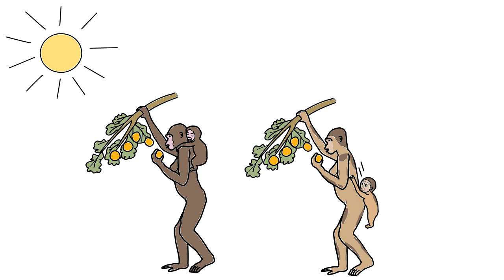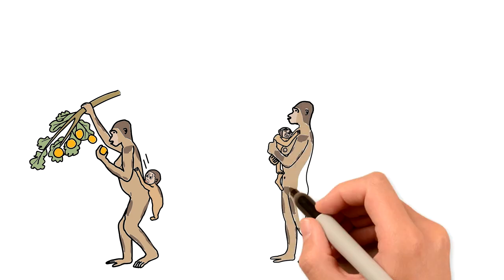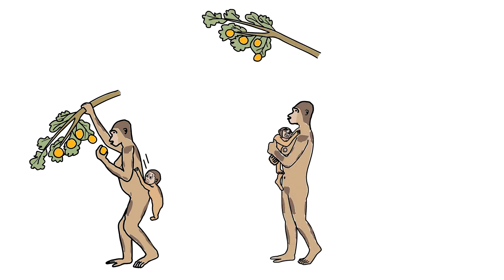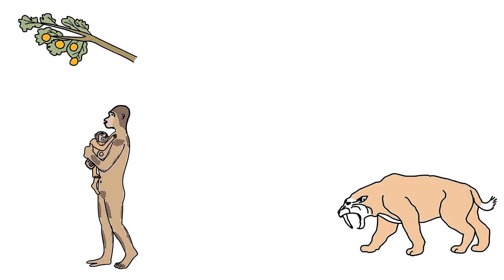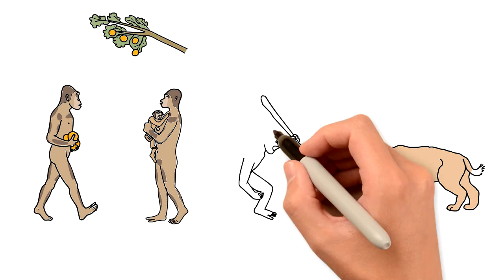As a result, younglings struggled to find something to grab on. So now their mothers had to carry them around on their hands. This caused some additional difficulties with food foraging and made them more vulnerable. So fathers had to start helping mothers by providing food and protection.